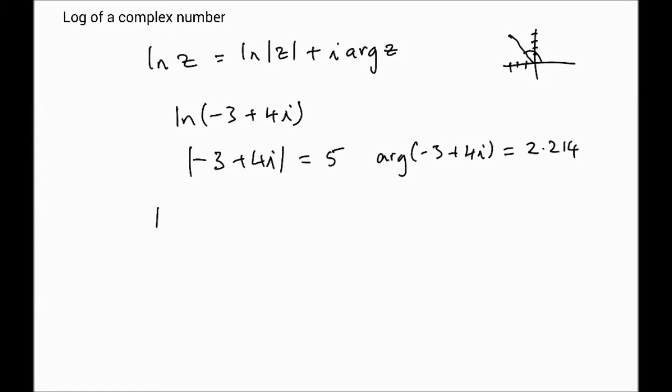Now we are in a position to say that log of minus 3 plus 4i is equal to log of 5, which we can easily calculate, ln 5, plus i times 2.214, so we can actually write it down as a complex number, which is 1.609 plus i times 2.214.